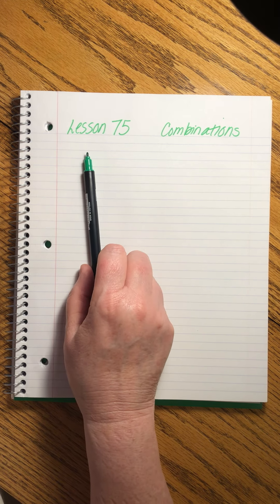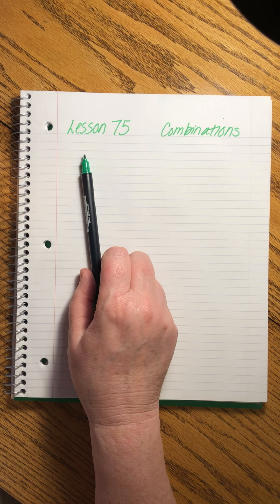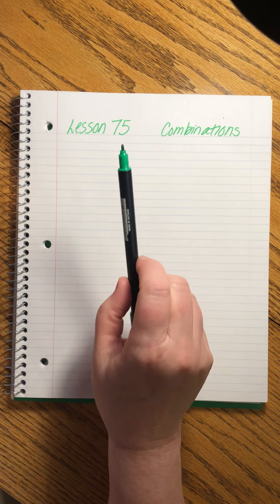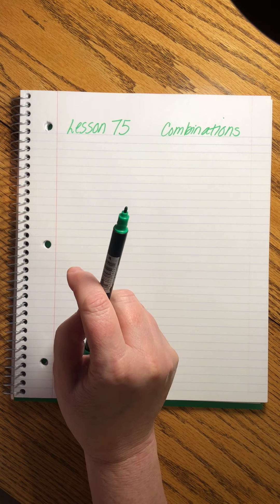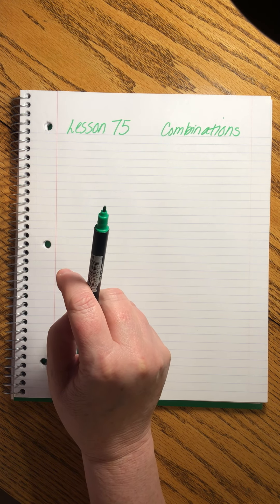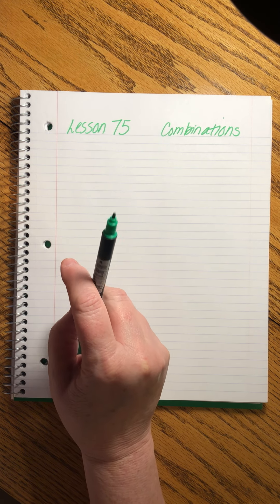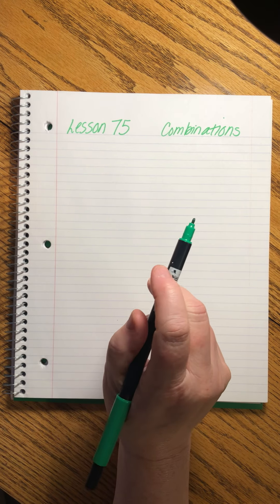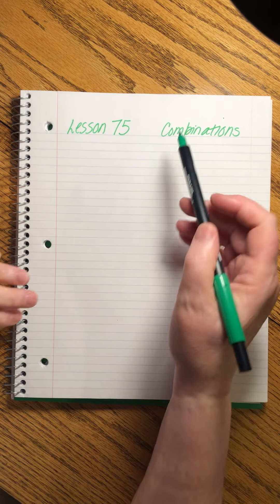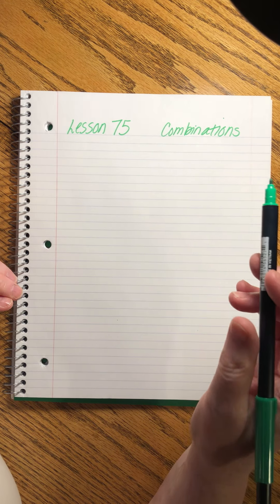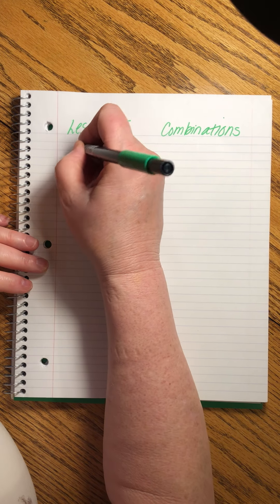Lesson 75 is going to take us in a different direction, but it is equally cool and interesting. It takes us back to our study of permutations, the different number of ways that things can be organized or chosen or arranged. A combination is a special kind of permutation. So let me write down the definition.